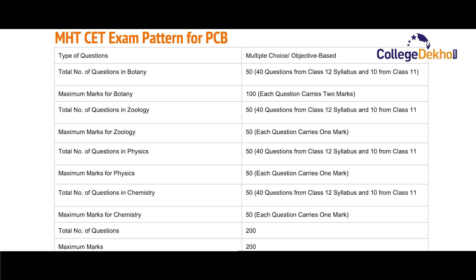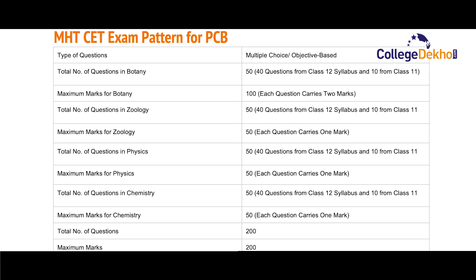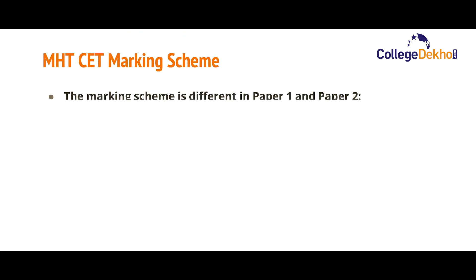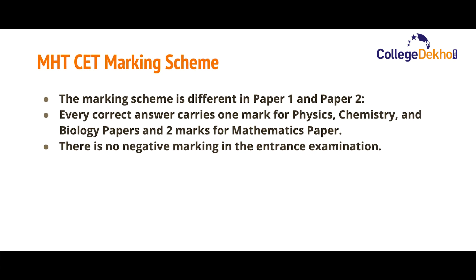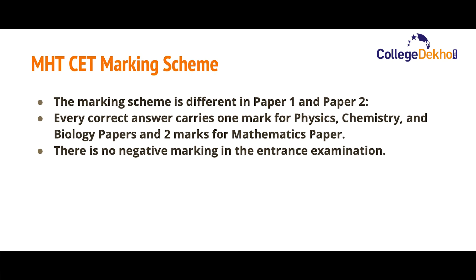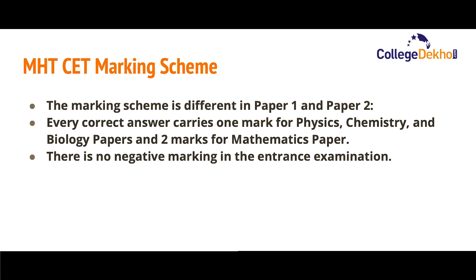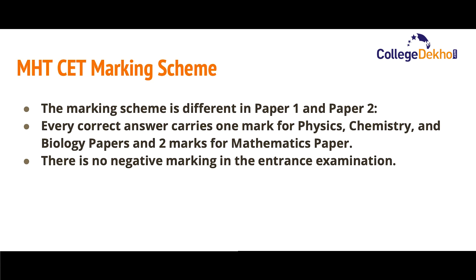The total number of questions in Chemistry will be 50 — 40 from Class 12 and 10 from Class 11 — with maximum marks of 50 and each question carrying one mark. The total number of questions for the PCB group will be 200, with maximum marks of 200. Regarding the marking scheme: each correct answer will carry one mark for Physics, Chemistry, and Biology papers, and two marks for Mathematics papers. There is no negative marking — for an incorrect answer, you will be awarded zero marks.